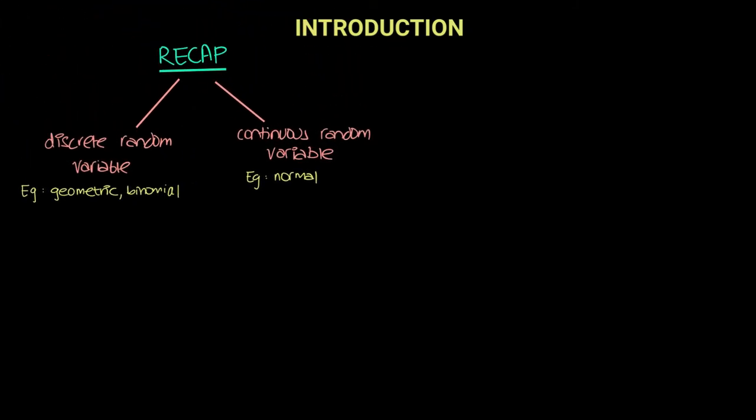In the previous topics, we learned what a random variable is. We learned that a discrete random variable is a random variable which comprises of discrete values such as 1, 2, 3, and so on.